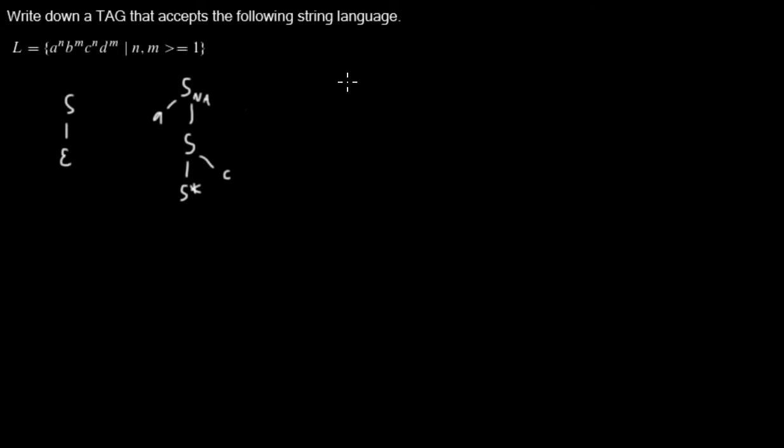So I write down another auxiliary tree, which is similar to that one with a null adjoin here, but with a node with another label in the middle, which is T.